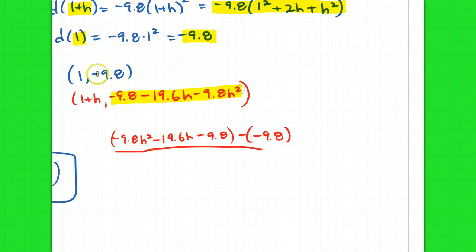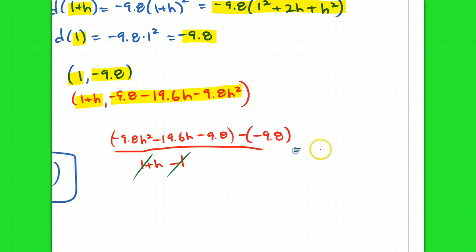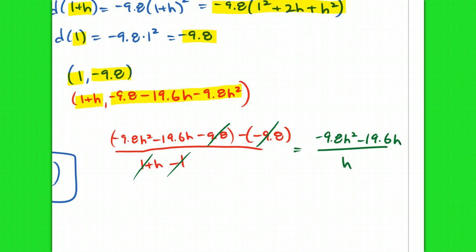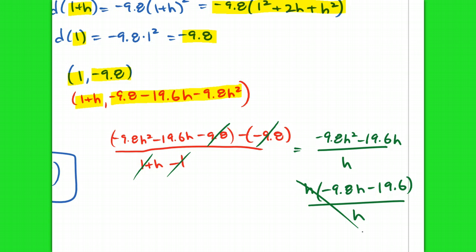The change in x values is (1+h) minus 1. The ones cancel in the denominator, giving just h. In the numerator, the −9.8 and +9.8 cancel, leaving −9.8h² − 19.6h over h. Factoring out h in the numerator and canceling with the denominator, I'm left with an average velocity of −9.8h − 19.6 on the interval from 1 to 1+h.